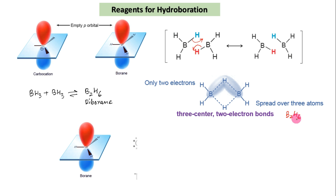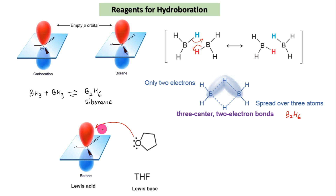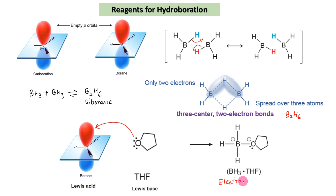Borane is a strong Lewis acid that reacts readily with Lewis bases. For ease in handling in the laboratory, it is commonly used as a complex with tetrahydrofuran, THF. Although the boron atom does receive some electron density from the solvent, it is nevertheless still very electrophilic and subject to attack by the pi bond of an alkene.